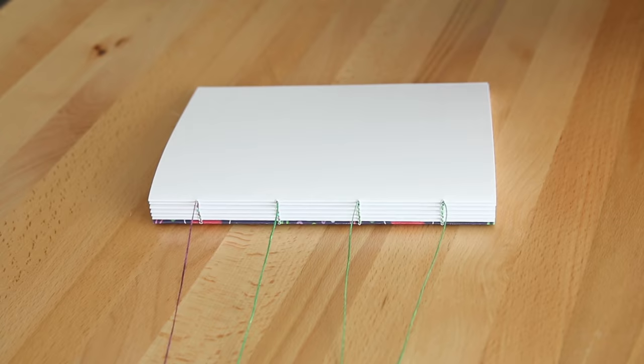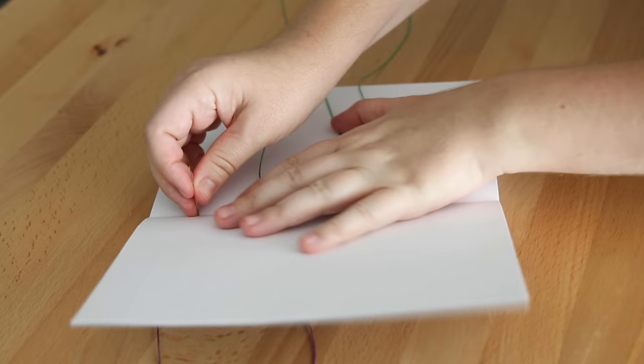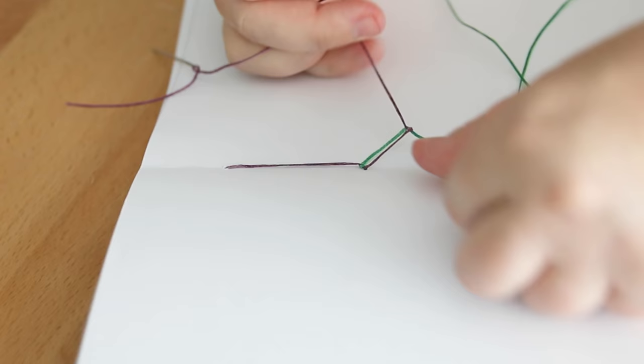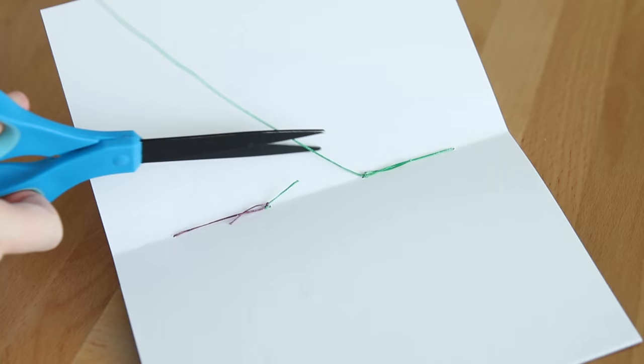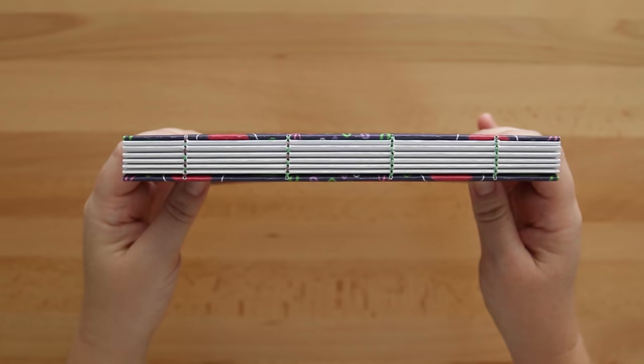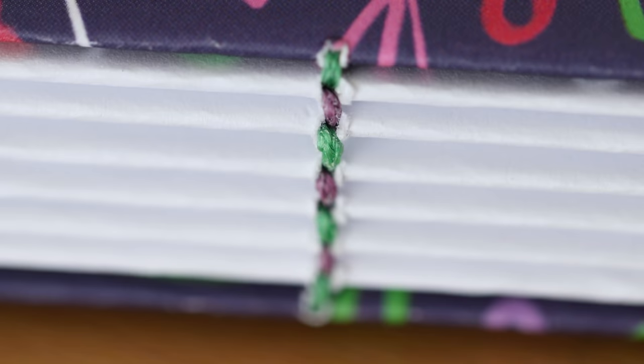When you reach the last signature, you can do the same process, pulling all needles to the inside. But instead of crossing them over, you're going to tie each section in a knot. And trim off any excess thread. This method doesn't give you any loops or stitches to the outside of the spine, giving you a minimal row of threads.